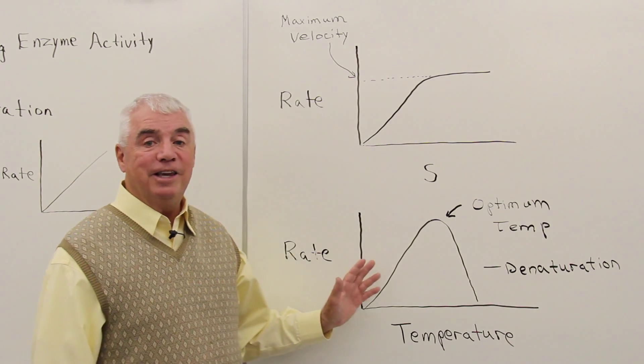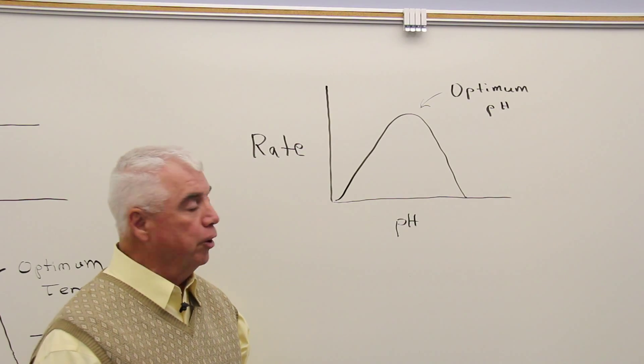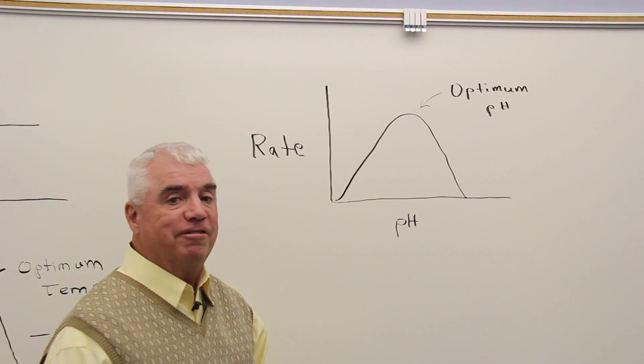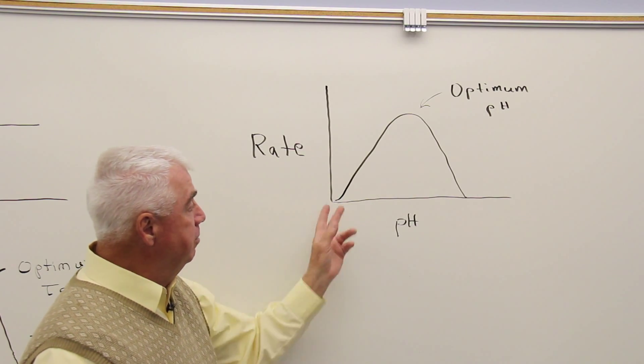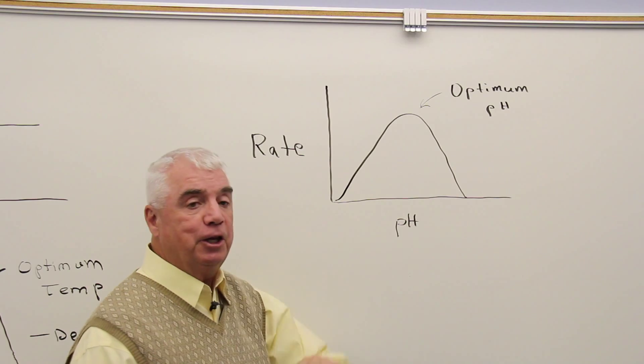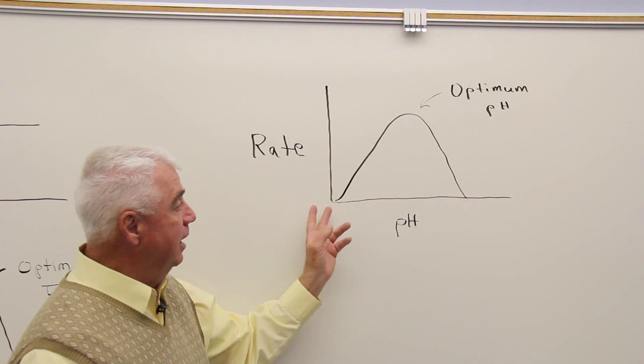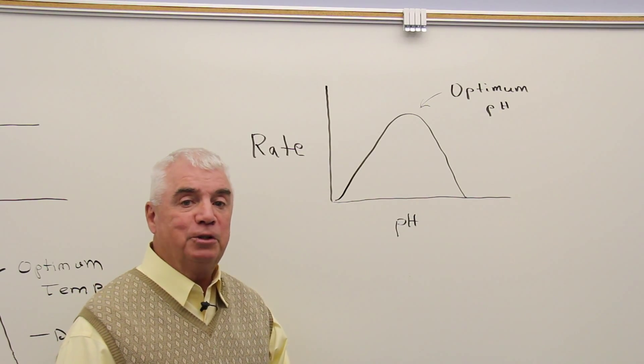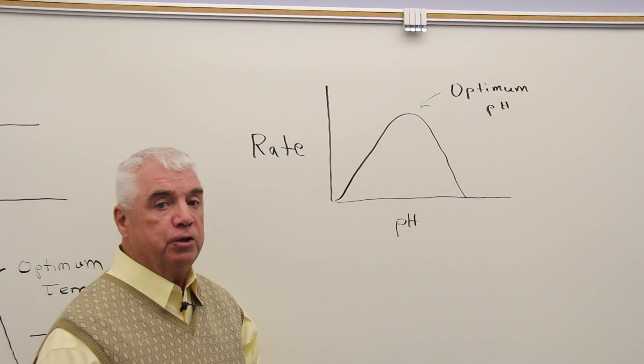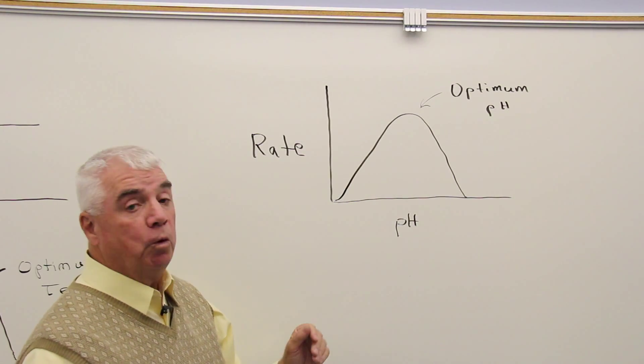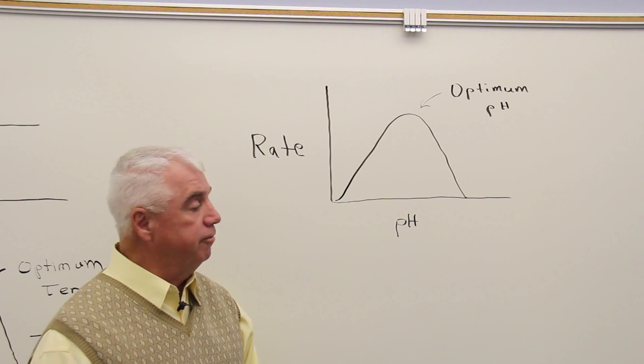Let's look at the effect of pH. This curve reminds us of the temperature curve. Maybe it doesn't drop off as precipitously over here on the right hand side. But at low pHs and high pHs, enzymes typically don't work very well. That's because we know that enzyme or protein structure is affected by changes in pH, and that there will be some ideal pH at which the enzyme works most efficiently.